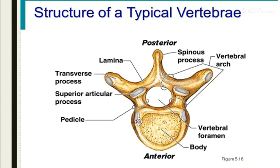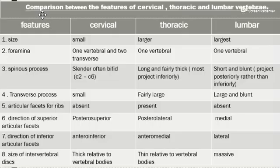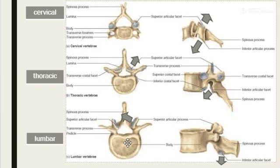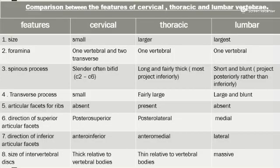The costal processes are only seen in thoracic vertebrae because the ribs are attached to the vertebrae in this portion. Now for the comparison between the features of cervical, thoracic, and lumbar vertebrae: the size of cervical is small, thoracic is larger, and lumbar is the largest.